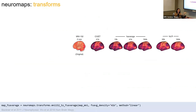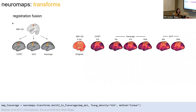Here are the different spaces we work with: MNI across different resolutions (1mm, 2mm, 3mm), CIVET at 41,000 vertices, and FS average across different densities — usually referred to as FS average 5 or 6, but we refer to them by number of vertices, which is what we really need to know. Then FSLR 32K and 164K; we also have 4K and 8K, which aren't used often but are sometimes used for MEG data.